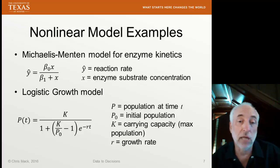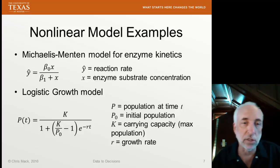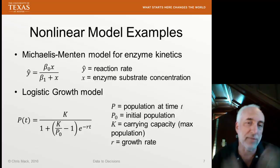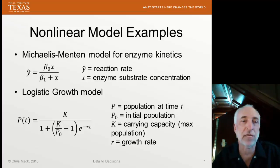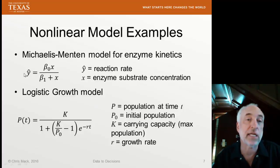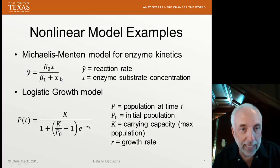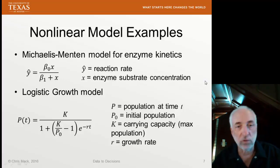Nonlinear regression models happen all the time. They show up all the time in science and engineering. Here's just a couple examples from the literature. Baylis-Menten model for enzyme kinetics. A model that you find in many kinetic processes where the rate at which a reaction occurs varies with the concentration of the reactant. You see that it's nonlinear in the coefficients. Logistic growth model, commonly used for populations where there's some limit, some max population called the carrying capacity. And this would show how the population varies with time. These are nonlinear models. Fitting data to these models requires nonlinear regression.